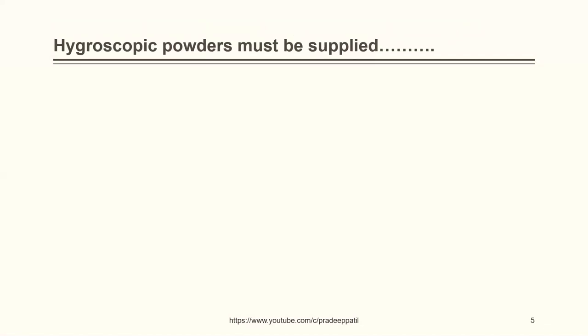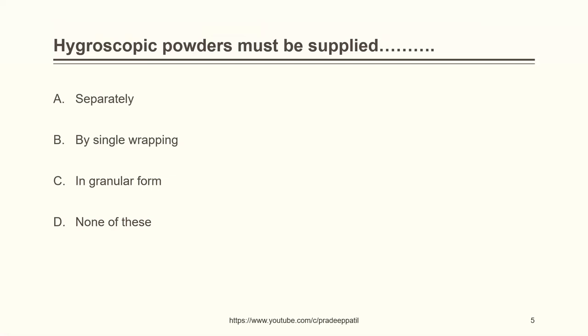Hygroscopic powders must be supplied separately by: single wrapping, in granular form, or none of these. The correct answer is in granular form. The basic reason behind this is that hygroscopic powders absorb moisture owing to increased surface area. The only way to reduce absorption is by reducing the surface area, so granular form helps achieve a reduced surface area, thereby reducing the water-absorbing ability of the powders.